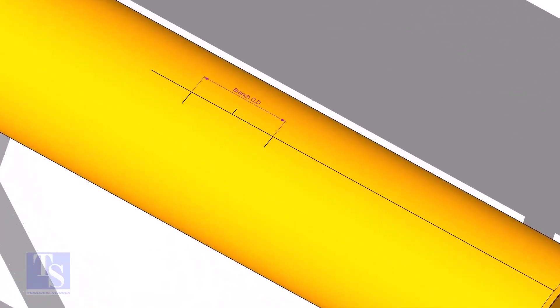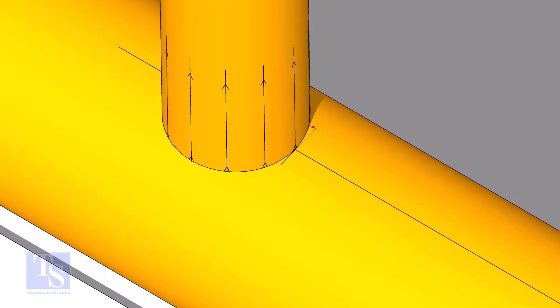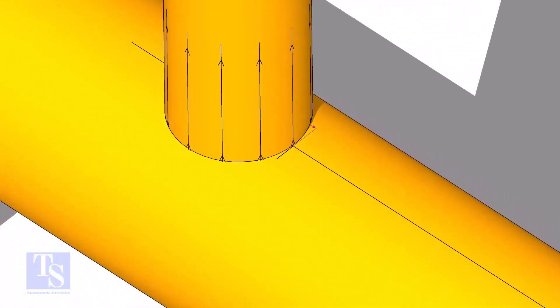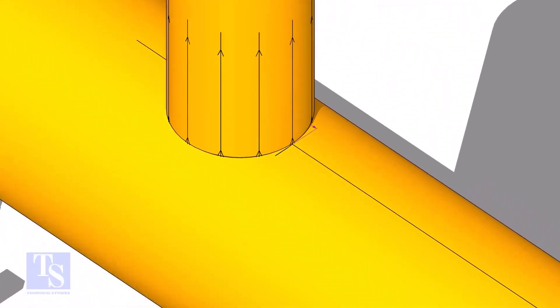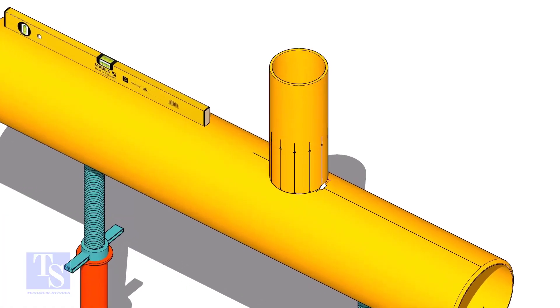Mark the branch OD on the center line of the header. Put the branch exactly on this marking, matching the branch center line. Tack weld the branch on the header, just to stand it vertically.